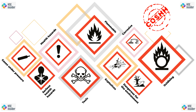Welcome to Ecology Professionals. Today in this video we are going to discuss about COSHH, that is Control of Substances Hazardous to Health. COSHH is a set of regulations put in place to protect workers from exposure to hazardous substances in the workplace. These regulations cover a wide range of substances, from chemicals and cleaning products to biological agents and fumes. The main goal of COSHH is to prevent ill health and injury caused by exposure to these substances.